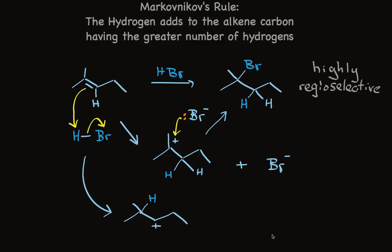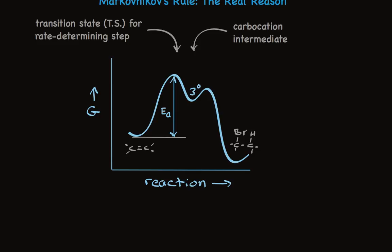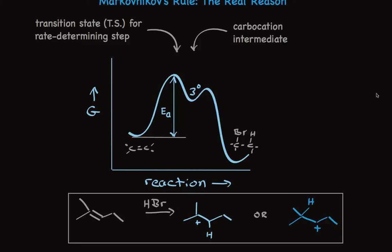Let's take a quick look at the energy diagram for electrophilic addition to see why the tertiary carbocation is favored. Here's the two-step energy diagram. There are two humps because there are two steps. And the first step is a slow step. The activation energy for that step is much greater. Keep in mind that the reaction we're talking about looks like this.